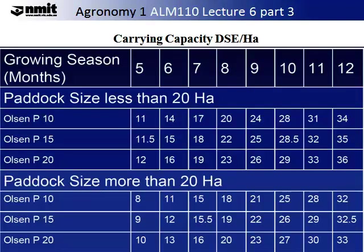The table on your screen shows the carrying capacity. This is the relationship of the time of year with your paddock size and how much supplement should be applied. You will notice there are different quantities if your paddock is over 20 hectares compared to under 20 hectares, and this is also dependent on what point in the growing season you are currently at.